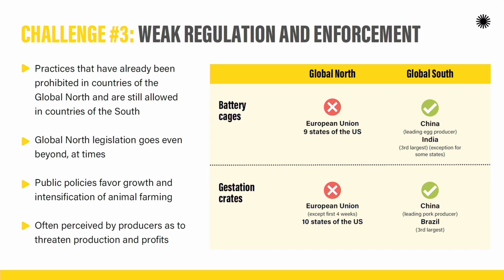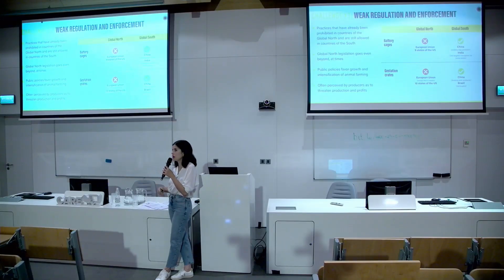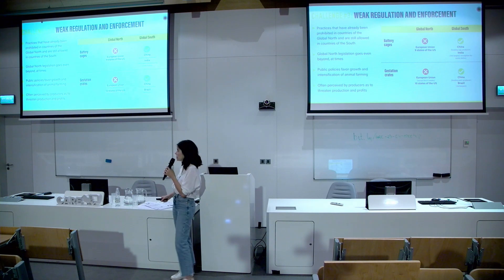Just to highlight: we are talking about battery cages and gestation crates, but in the Global North, legislation sometimes goes even beyond that. In California, it is not even allowed to sell products from battery cages or cages for pork and veal. In France, supermarkets can only sell free-range eggs. So it's not only legislation banning the worst practices, but going even beyond — which is unimaginable at this point for Global South countries.